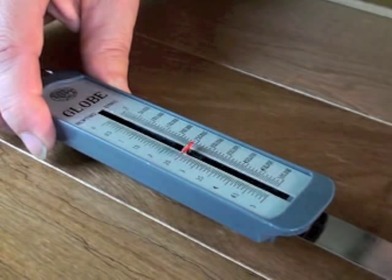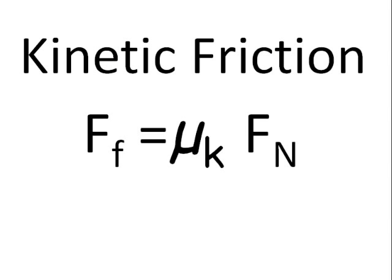And this is called kinetic friction, when the thing is moving. The formula is the same as before, but the coefficient is different. It's called the coefficient of kinetic friction. F equals μ_k times the normal force.